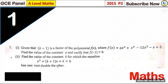Question one reads: given that x minus one is a factor of the polynomial f(x), where f(x) equals ax to the power four plus x to the power three minus two x squared minus x plus two, find the value of the constant a, and verify that f(−1) equals zero.